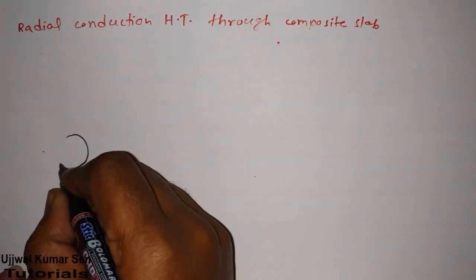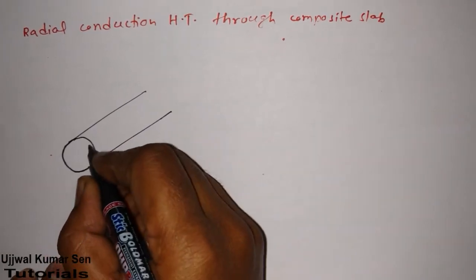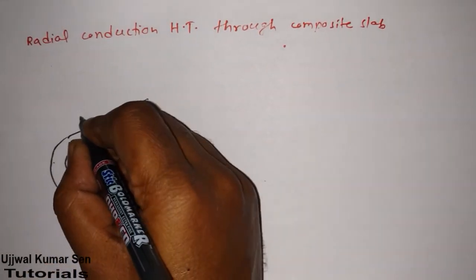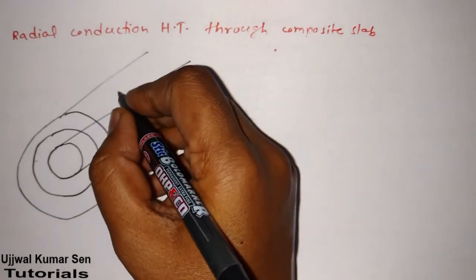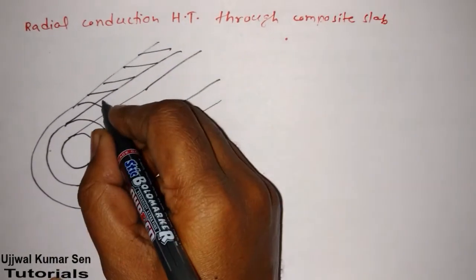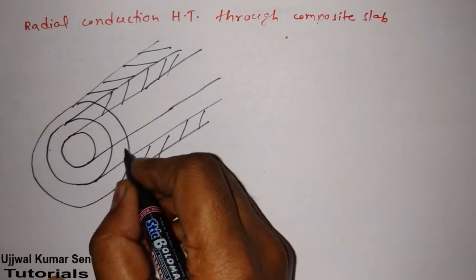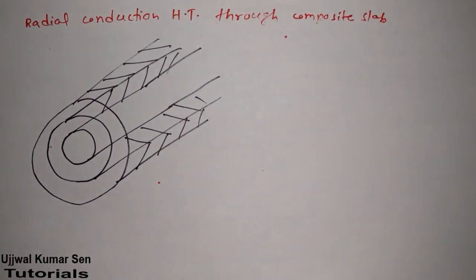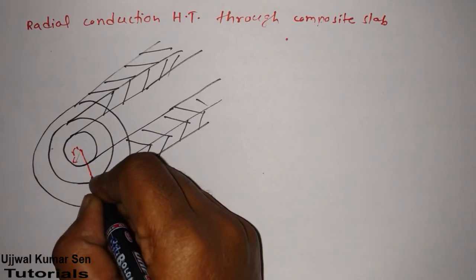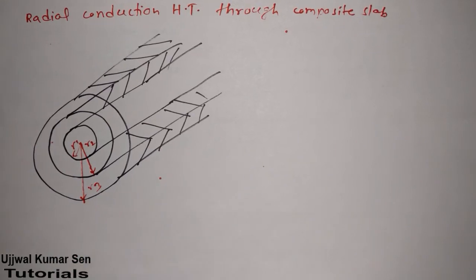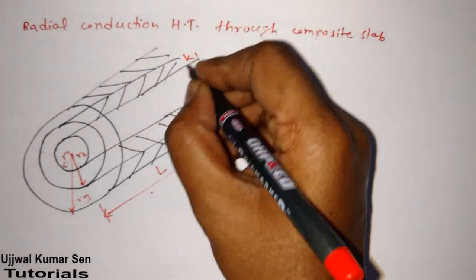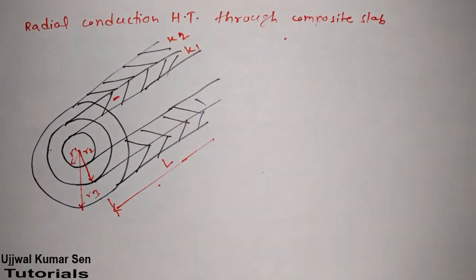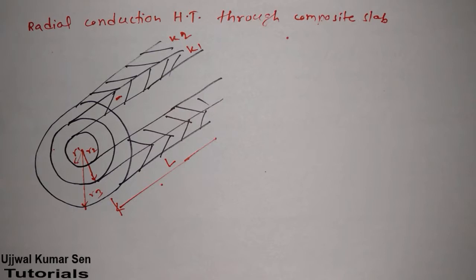If you are talking about a composite cylinder, it would look like this — a hollow cylinder, and then we have another one inside it, making it composite. We label the radii as R1, R2, and R3. The length of the cylinder is L. For the inner layer the thermal conductivity is K1, and for the outer layer it is K2.